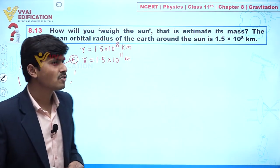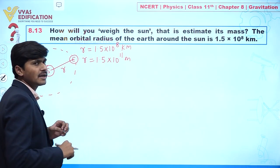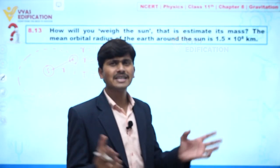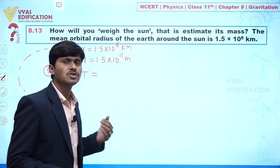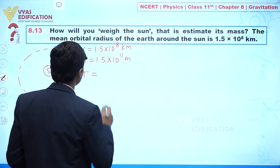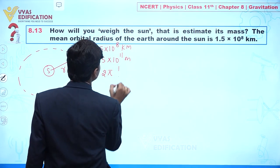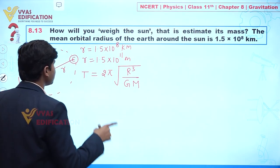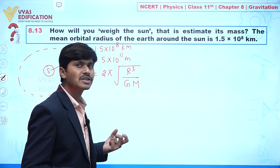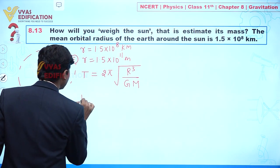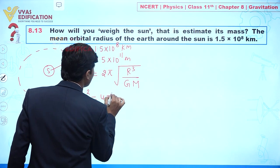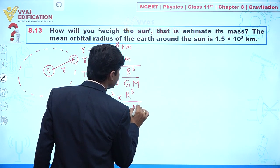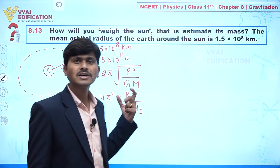To calculate the mass, we use the time period formula. If a satellite is revolving around a planet, the time period is given by T = 2π√(r³ / GM). Squaring both sides gives T² = 4π²r³ / GM, where M is the mass of the Sun.